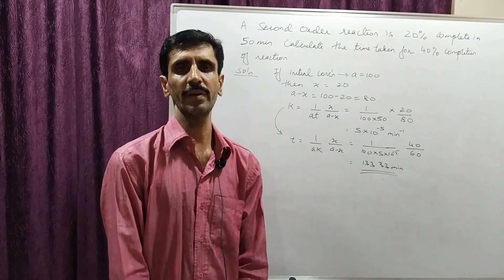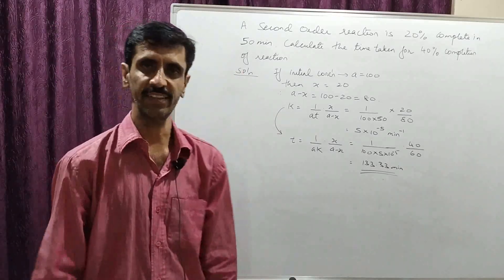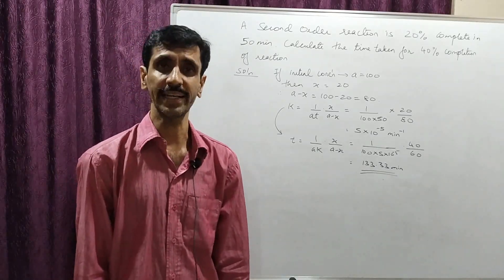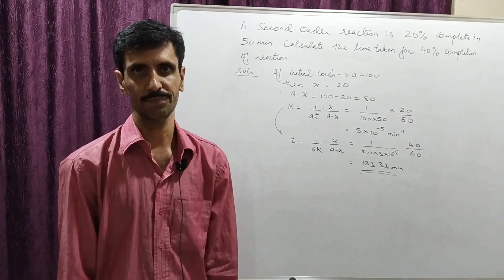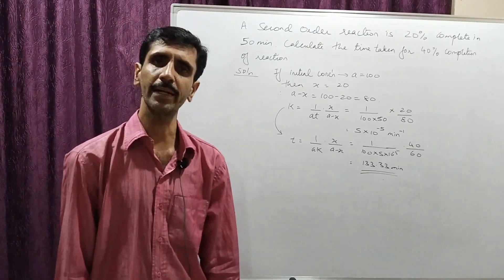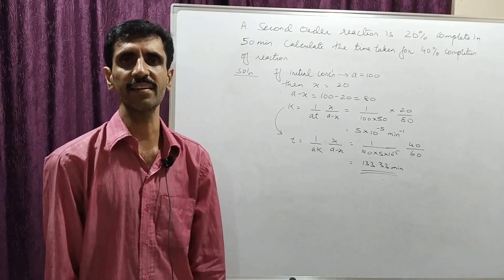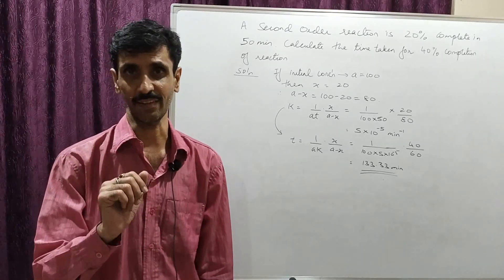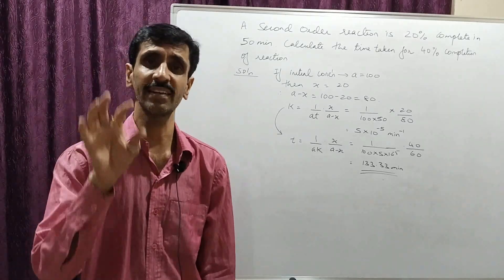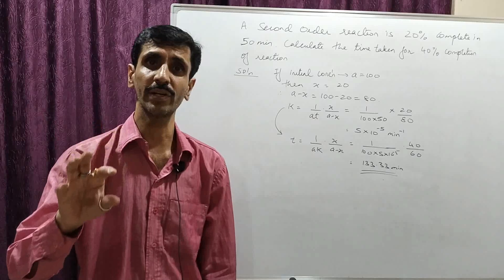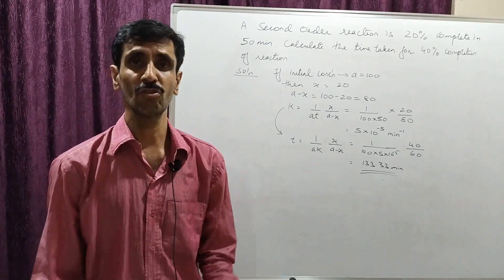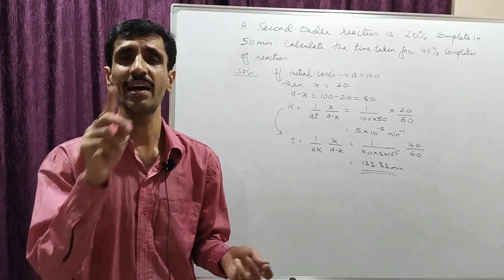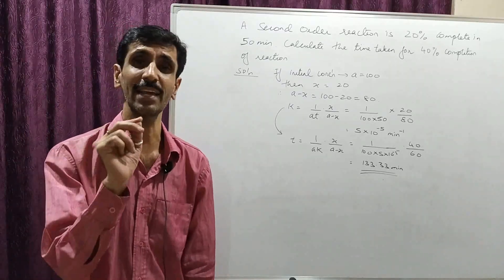We move on to the next numerical. A second order reaction is 20% complete in 50 minutes. Calculate the time for 40% completion of the reaction. For the solution, since it is expressed in percentages, we consider the initial concentration as 100. The amount reacted is 20%, so x = 20. Therefore a−x = 100 − 20 = 80. The time is 50 minutes.